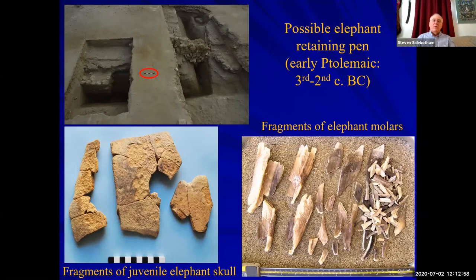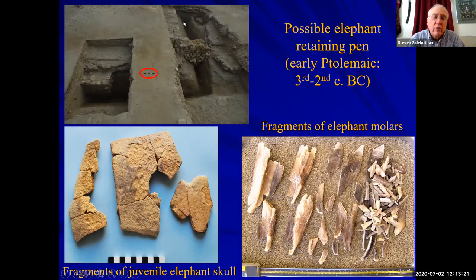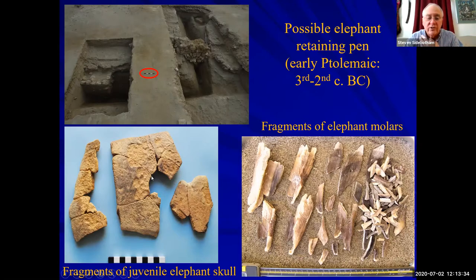We've certainly found evidence of what the Ptolemies were most interested in: the acquisition of war elephants. They did not have access to the Indian variety, so they sought those in East Africa — mainly the bush and forest elephants. We found the remains of what we're pretty sure is an elephant retaining pin where they would have unloaded the elephants and kept them prior to marching them across the desert to the Nile. We've also found osteological evidence: part of a skull of a juvenile elephant and some molars. Unfortunately, the DNA is too degraded to identify the species.